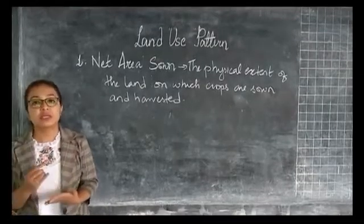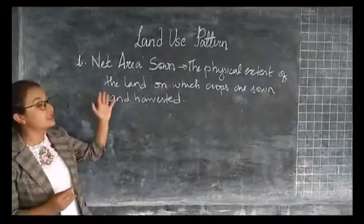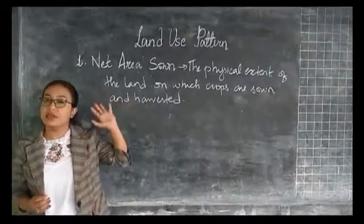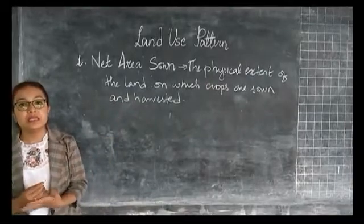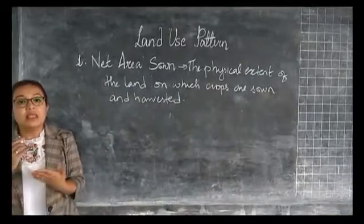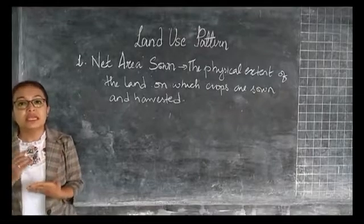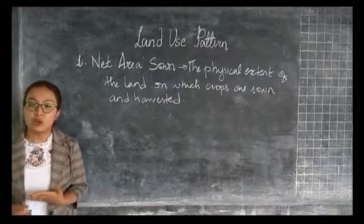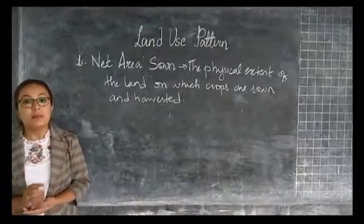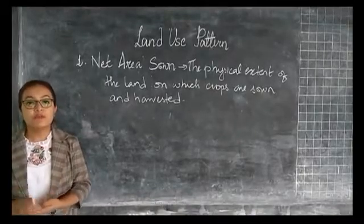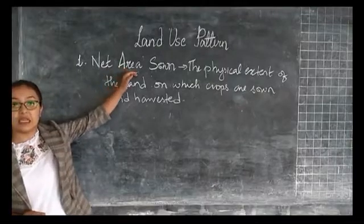Agricultural production largely depends on this type of land, that is the net area sown. Since the population has been increasing rapidly in our country, there is an urgent need to increase the net area sown for meeting food and other requirements. But there isn't much scope for increasing the area under this category.